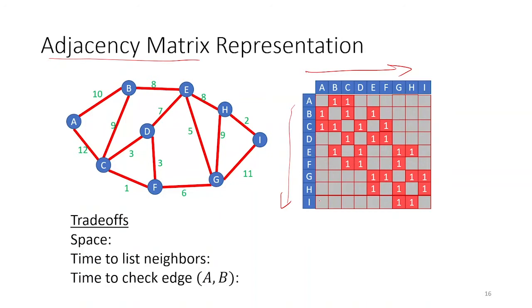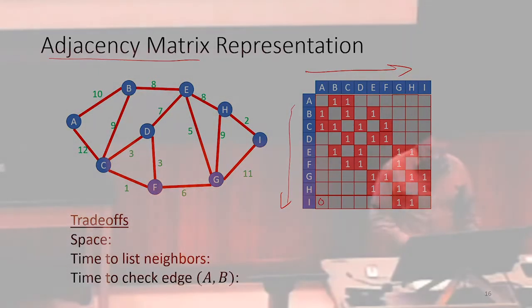Since there is no edge from A to I, we're going to have a zero there from A to I. This is an adjacency matrix representation. Each one has its own advantages, disadvantages. For the purposes of what we're talking about in this class, those advantages and disadvantages aren't going to make a huge amount of difference.